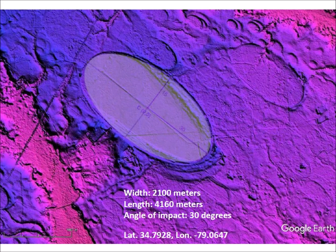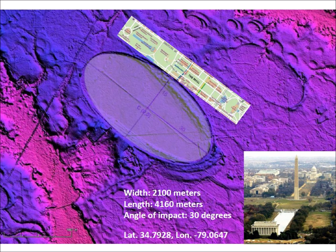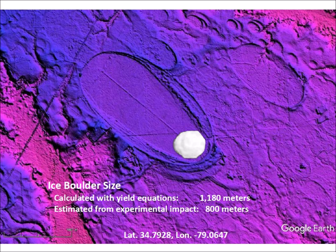One large Carolina Bay located 33 kilometers southwest of Fayetteville, North Carolina, has a precisely elliptical geometry with a width of 2,100 meters and a length of 4,160 meters — so large that the National Mall from the Lincoln Memorial to the U.S. Capitol could fit inside it. The width-to-length ratio indicates an angle of impact of 30 degrees. Equations correlating crater size to projectile diameter estimate the ice boulder had a diameter of 1,180 meters and energy of 1,250 megatons, though tabletop experiments suggest about 800 meters.